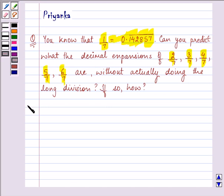Let us proceed with our solution. Now, I will tell you how you will do it. We are given the value of 1/7 as 0.142857, isn't it?